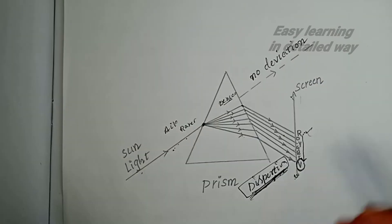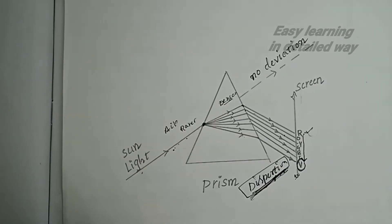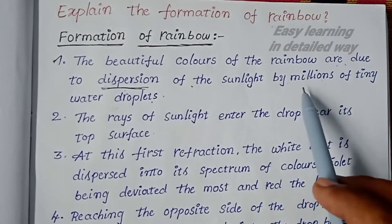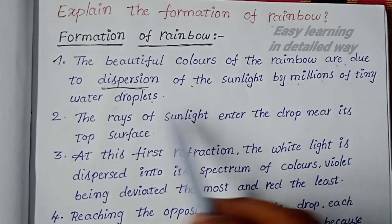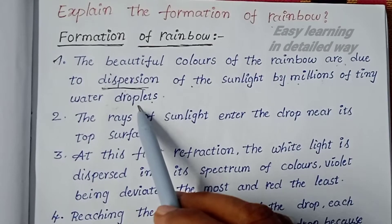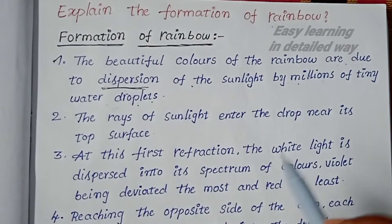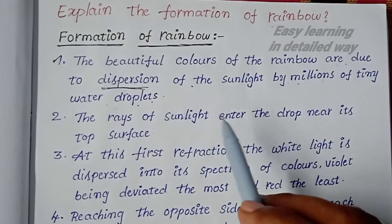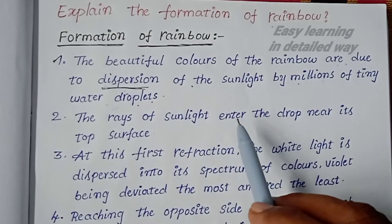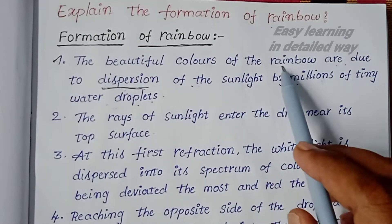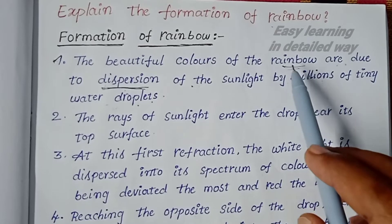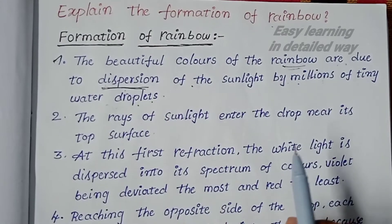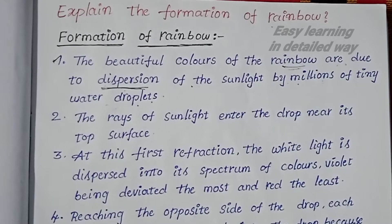Due to this dispersion of light by millions of tiny water droplets, those droplets act as prisms. So the dispersion of light by water droplets is what forms the rainbow. I will show you in detail.